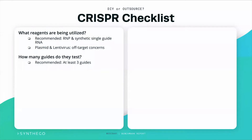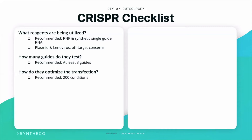We recommend that they try at least three guides if they're doing this as a service, and you should ask how they optimize the transfection. Do they do a 200-point transfection optimization? If not, what do they do? How do they optimize the transfection, and how do they know they have the right parameters to guarantee or at least be successful with making the cell lines you're asking for?